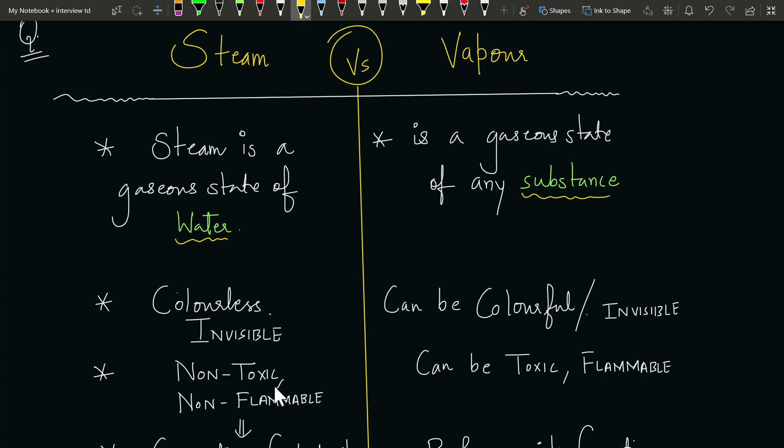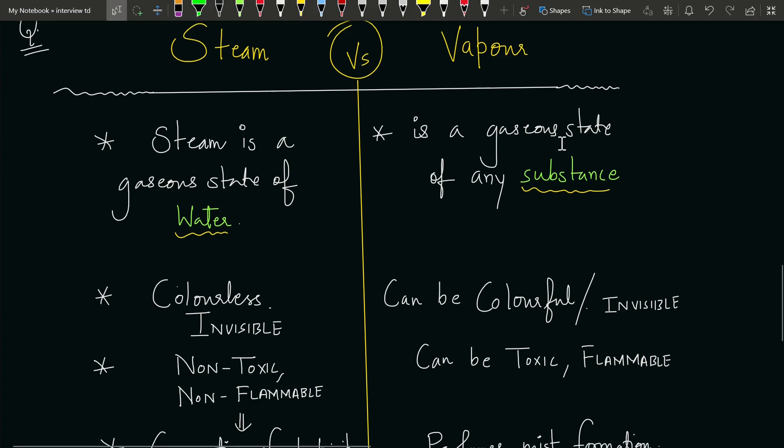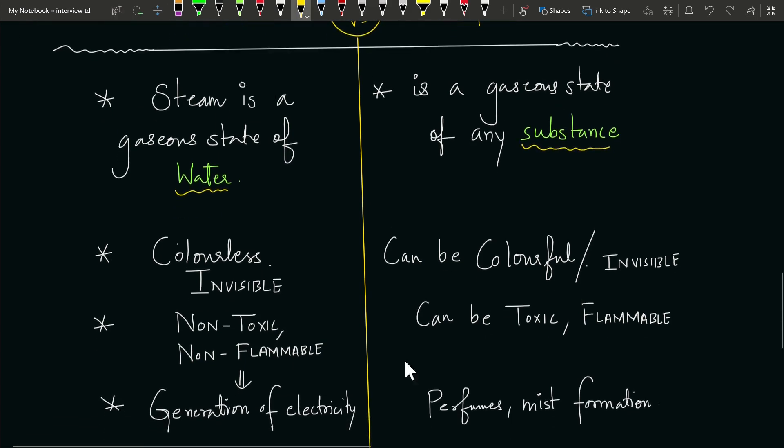That is the reason why we use steam in generation of electricity, because it is very easy to deal with and it has no disadvantages in terms of toxicity and flammability. That's why we use steam for generation of electricity in our thermal plants.